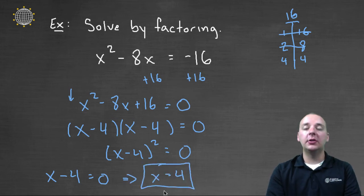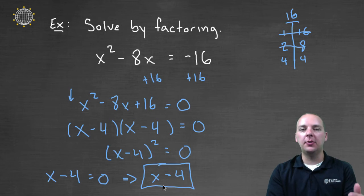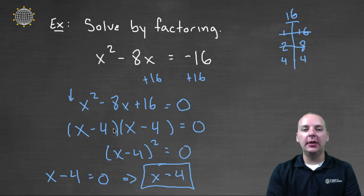So this quadratic would actually only have one solution. Only four is a solution; it doesn't have two solutions like some quadratic equations do. So just be aware, if you have the same factor listed twice, it's not a big deal at all. You just have to set one of the individual factors equal to zero and solve.